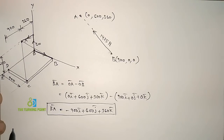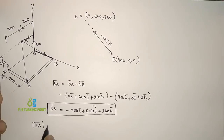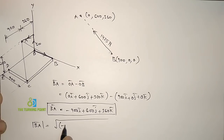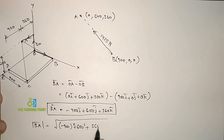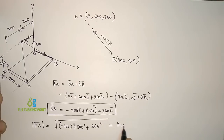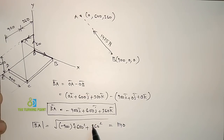Next, let us calculate the magnitude of this position vector. The magnitude |BA| = √((-900)² + (600)² + (360)²) = √(810000 + 360000 + 129600) = 1114.0. This is the magnitude of the position vector.